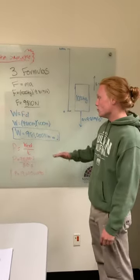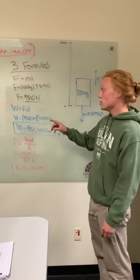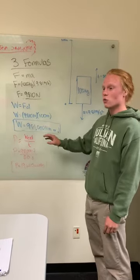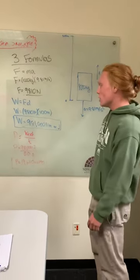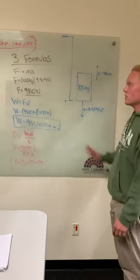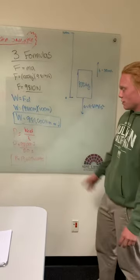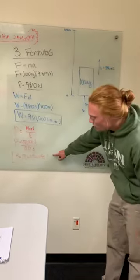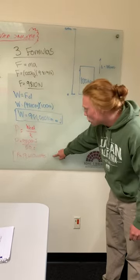After finding the work, we used the power equation and took work divided by time. Our time is 50 seconds, the time it's moving up. When we divided that, we found our power is 19,620 watts.